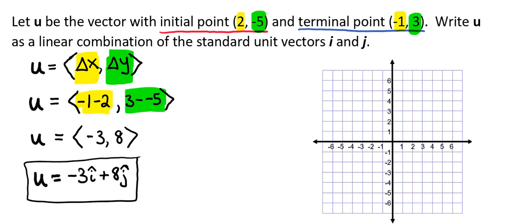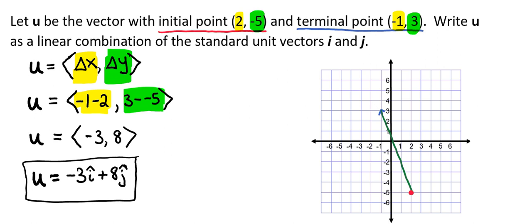So here we have a coordinate plane and we're going to grab our initial point and our terminal point, and our vector is between them. Remember that our standard unit vectors have a magnitude of 1, so they move 1 each time.